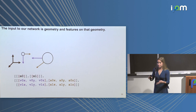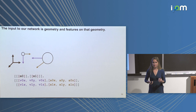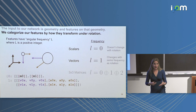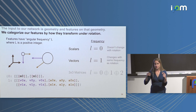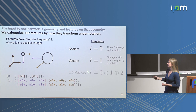Inputs to our network are the geometry and features on that geometry. An important thing about how we represent inputs is that we break them up by how they transform under rotation. Scalars don't change under rotation; vectors do. You can also have features that change at twice or three times the frequency of rotation. For example, a 3x3 moment of inertia tensor can be decomposed: the trace is invariant, the anti-symmetric component changes with rotation, and the symmetric traceless component changes at twice the rotational frequency.